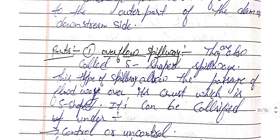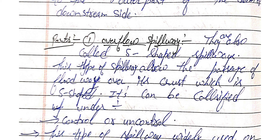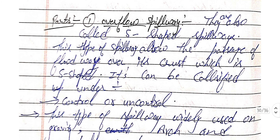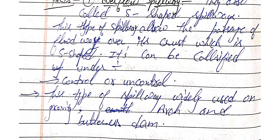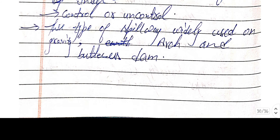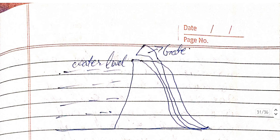The first type of spillway is the overflow spillway, also called the S-shaped spillway. This type allows the passage of floodwater over its crest, which is S-shaped. It can be classified as controlled or uncontrolled, and is widely used on gravity, arc, and buttress dams.